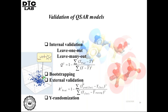In external validation, we use a separate set of data — test data or a completely external set — and calculate the metric R-squared external. External validation is considered the gold standard in scientific literature. We can also do bootstrapping based on sampling techniques, and Y-randomization, where we randomize the Y column keeping the X matrix intact and redevelop the model. Obviously, the random models will perform worse than the real model, and a metric can be computed to assess model performance under randomization.